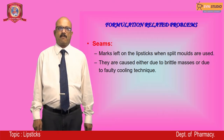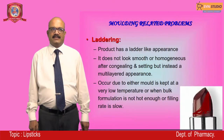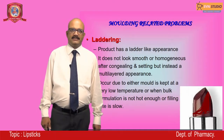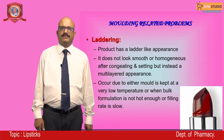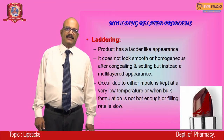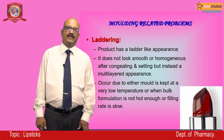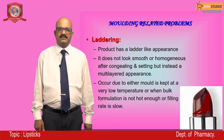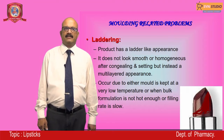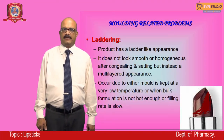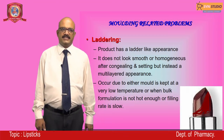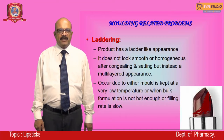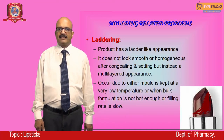Laddering is a molding-related problem where the product has a ladder-like appearance — a multi-layered appearance is observed instead of a smooth, homogeneous surface after congealing and setting. This occurs when either the mold is kept at a very low temperature or the bulk formulation is too hot or filling is too slow.